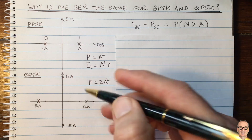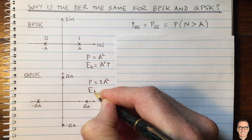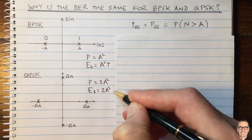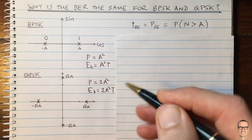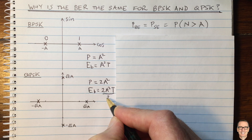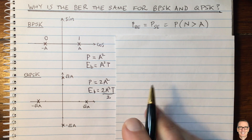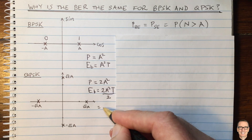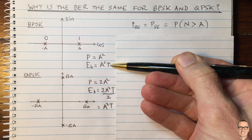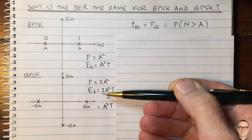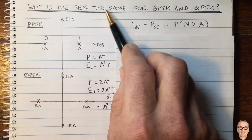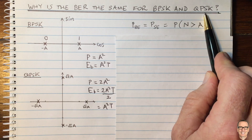Let's think about it from the point of view of the energy in the bits. The way I've drawn it here, the energy in the bits equals the power — 2 times a squared — times the time over which we're going to send it, which is the same as for BPSK. But now, because there are two bits every time we send a symbol, we divide by 2 to find the energy per bit. So in this case it equals a squared T, which is exactly the same value as we had for BPSK.